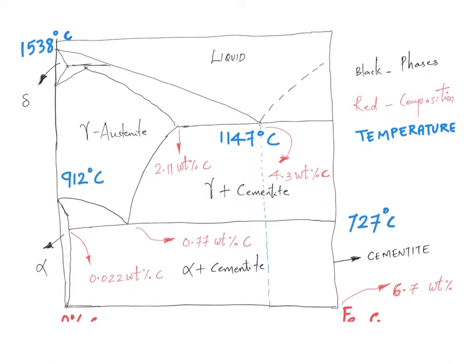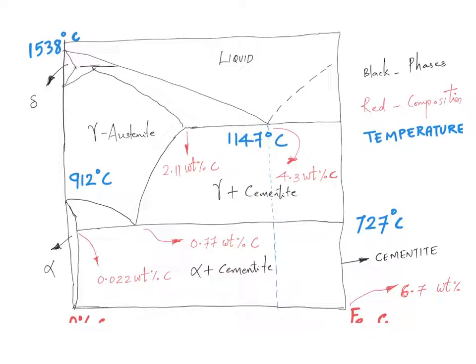Now the other point of interest is the eutectoid point. Eutectoid means it's like eutectic, similar to eutectic but not eutectic. The eutectoid composition in an iron-carbon diagram happens here. Let me tell you one thing: this is the most important reaction when we talk about heat treatment of steels. This particular reaction will form the basis for all or almost all the heat treatment processes on steels.